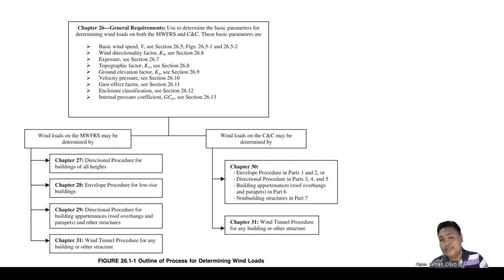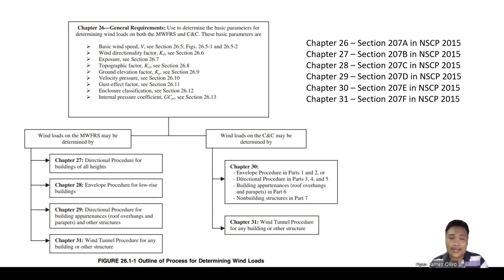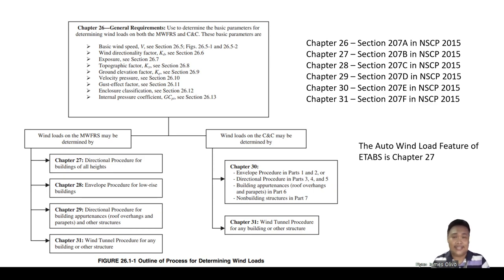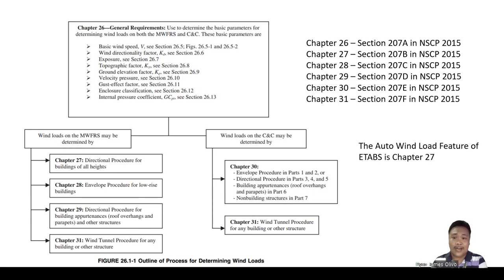These ASCE 7-16 chapters correspond to NSCP 2015 equivalents: Chapter 26 → Section 207A, Chapter 27 → Section 207B, and so forth. The auto wind load feature of E-TABS is focused on Chapter 27. One limitation is that the E-TABS auto wind load feature does not include internal pressure — that is a separate lesson, but I will show a strategy on how to include internal pressure.